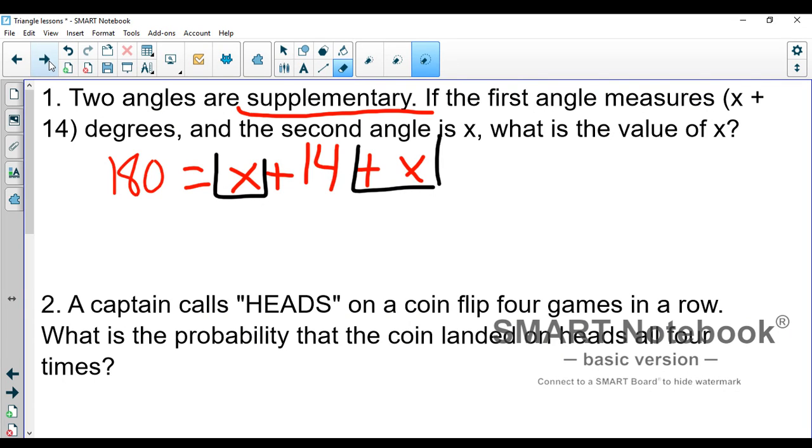Number one, two angles are supplementary. If the first angle measures x plus 14 and the second angle is x, what is the value of x? Well, in this case, supplementary means a straight line. So basically, we have a straight line broken into a couple angles. One measures x plus 14 and one just measures x.